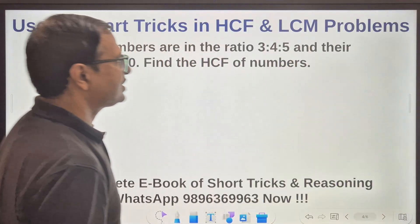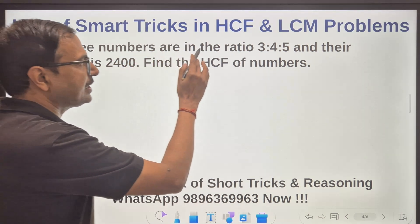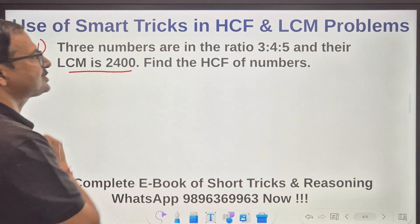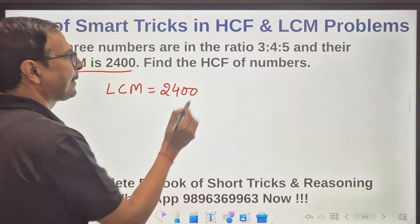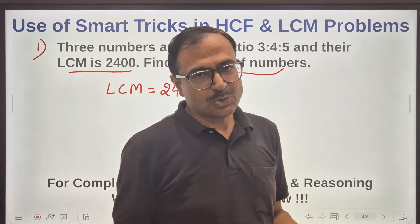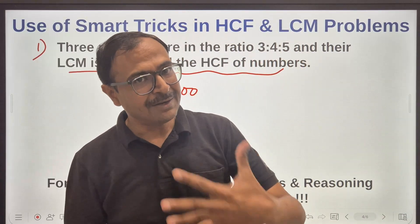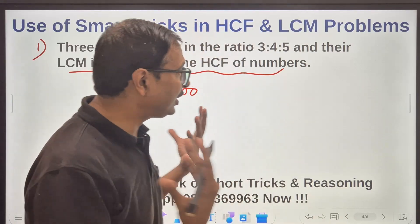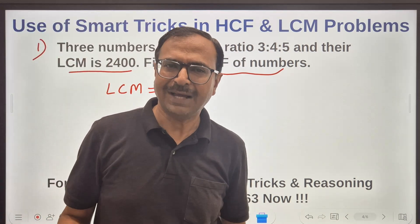Let's look at the first question. Three numbers are in the ratio 3:4:5 and their LCM is 2400. We need to find the HCF of the numbers. Most students would find the numbers first, then find the HCF using prime factorization or long division. But do we actually need to find the numbers to find the HCF in this case? I don't think so.